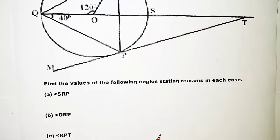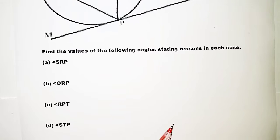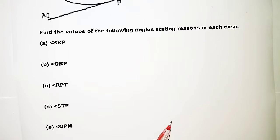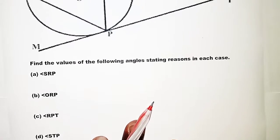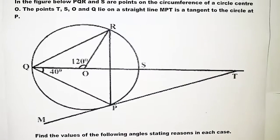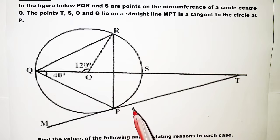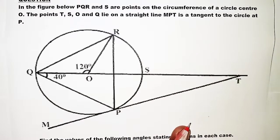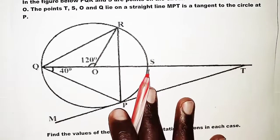The questions that follow ask us to find the values of the following angles, stating reasons in each case: A) angle SRP, B) angle ORP, C) angle RPT, D) angle STP, and E) angle QPM. The approach when dealing with such a question is to first fill in every missing angle in the diagram, and then answer the questions from there.